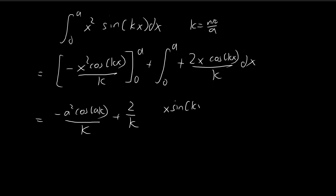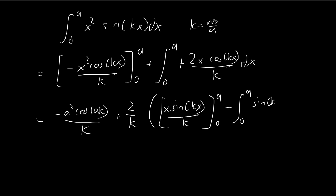So cosine kx becomes sine kx divided by k, evaluated from 0 to a, and then minus 0 to a. Then we differentiate this x term — this is just the standard procedure for integration by parts. Substituting a, you get sine nπ, because ka is just equal to nπ. And sine nπ is just equal to 0. Then substituting 0, you get 0 times sine 0, which is just 0. So this entire term is 0.